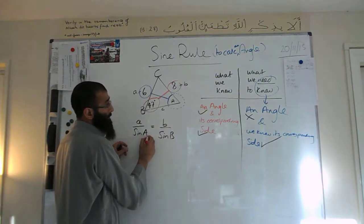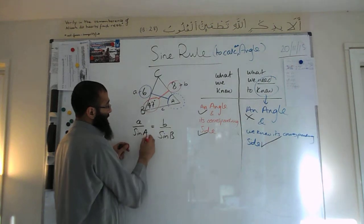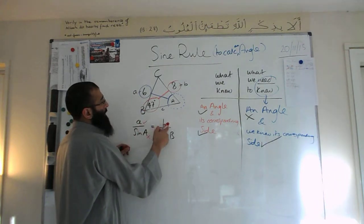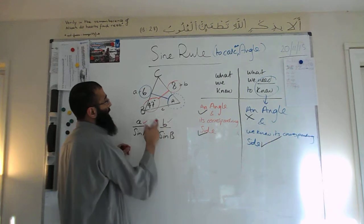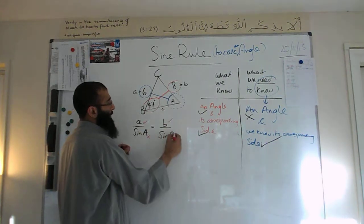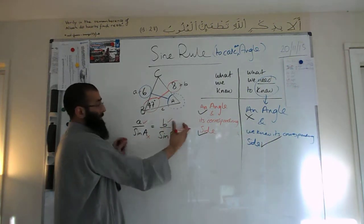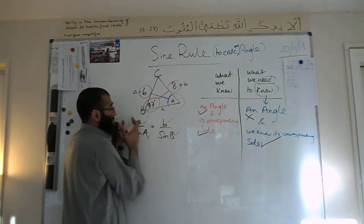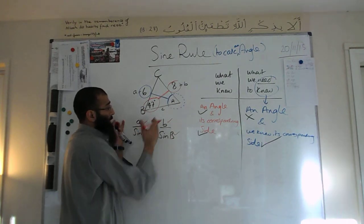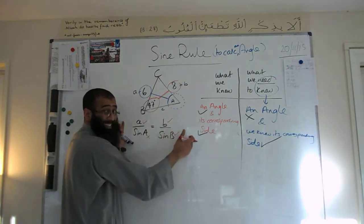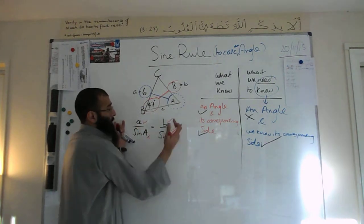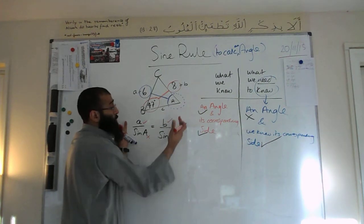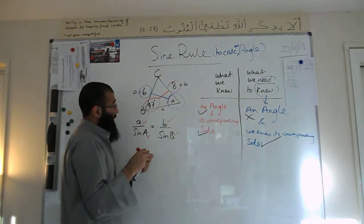So big A we don't know. Little a we do know. Little b we do know. And big B we know. In the full identity, we have a over sine A equals b over sine B equals c over sine C, but we only need to use these two parts. We only ever need two parts when using the sine rule.